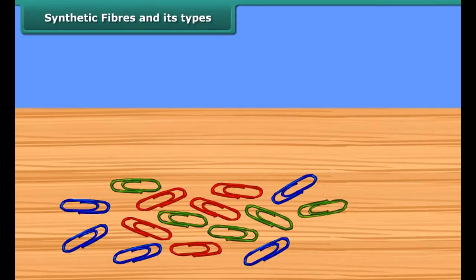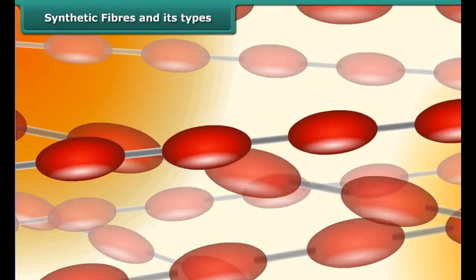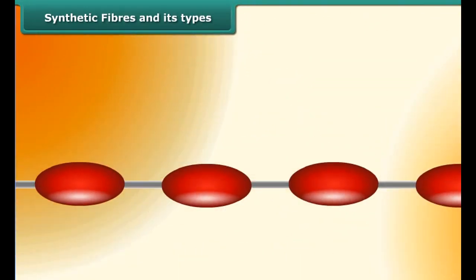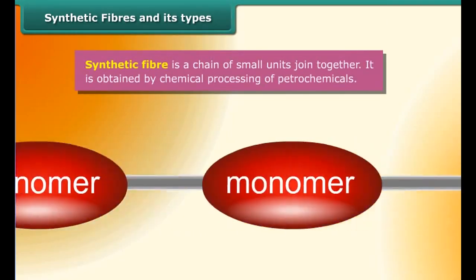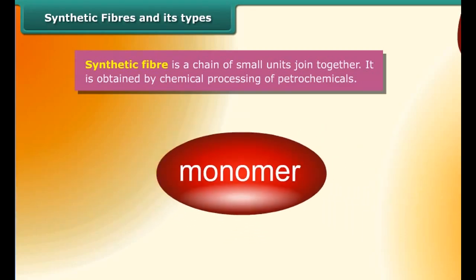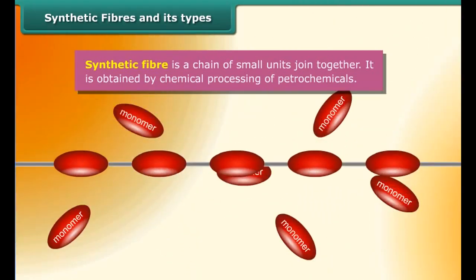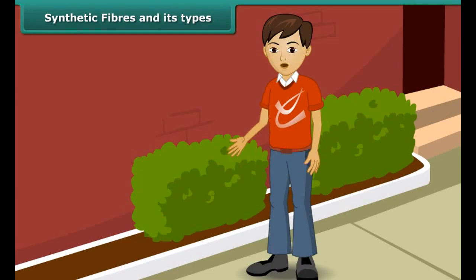Now let us join together a number of paper clips. What do you observe? This chain of paper clips is similar to the organization of a polymer. Here many small units combine to form a large unit known as a polymer. Each small unit is actually a chemical substance called a monomer. Synthetic fiber is an example of a polymer, obtained by chemical processing of petrochemicals.